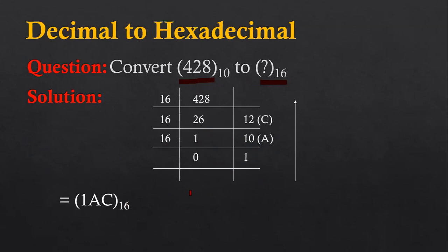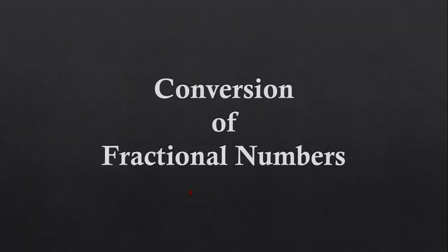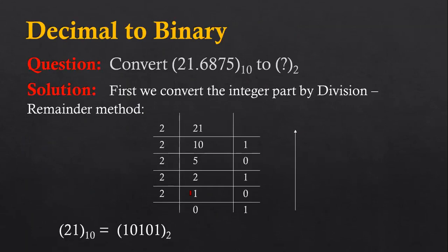With the help of this division method, we can convert decimal numbers into binary, octal, and hexadecimal. This was all about integer number conversion. Now I am going to discuss how we can convert fractional numbers from decimal to binary, decimal to octal, and decimal to hexadecimal. We have to apply two steps: first convert the integer part — which is 21, at the left-hand side of the decimal point — and then convert 0.6875, which is at the right-hand side of the decimal point.